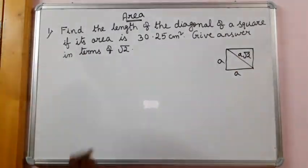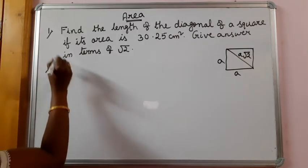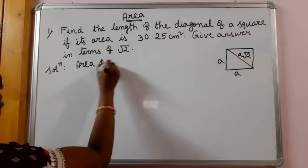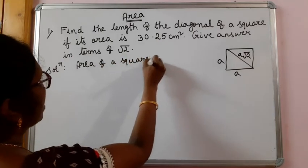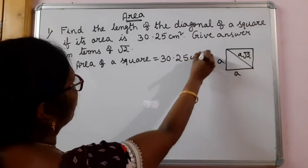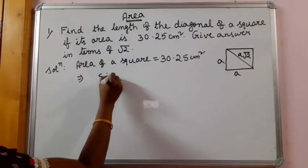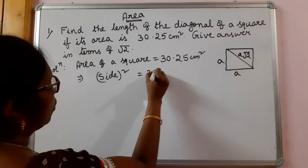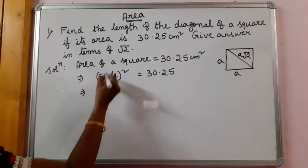So first, what is given — let me write. It is given that area of the square is equal to 30.25 cm square. We know that the formula for finding the area of a square is side squared, so side squared is equal to 30.25 cm square.